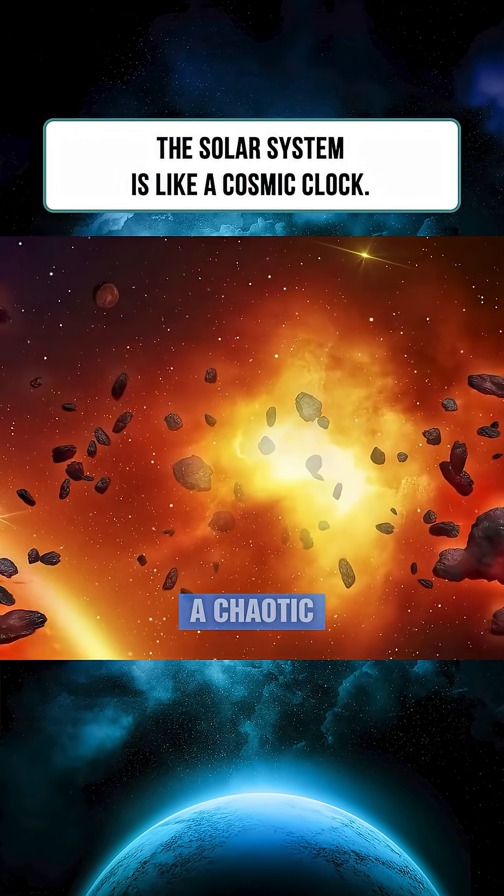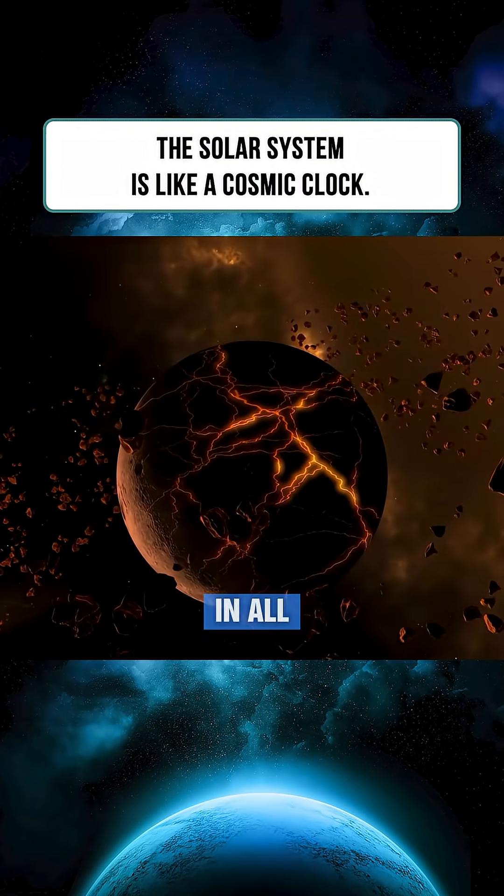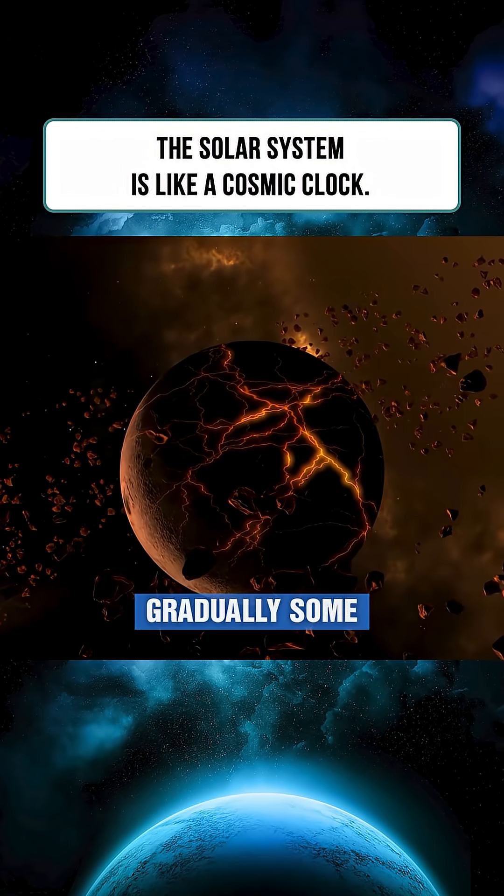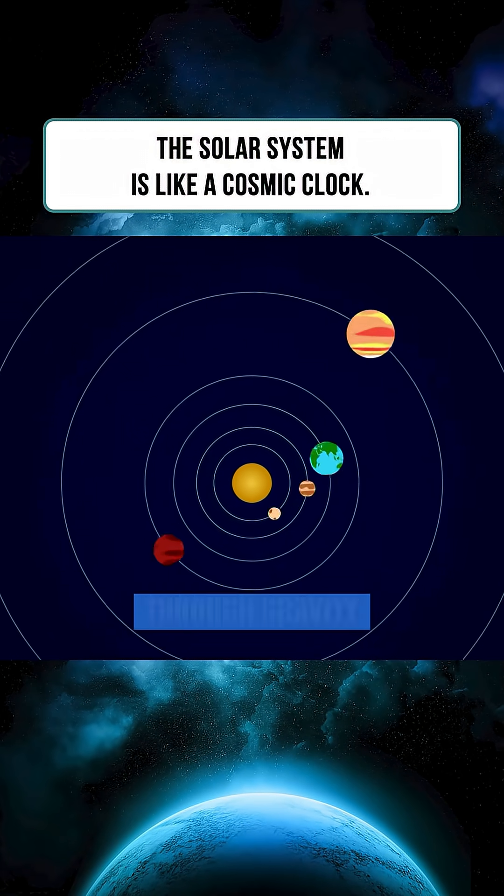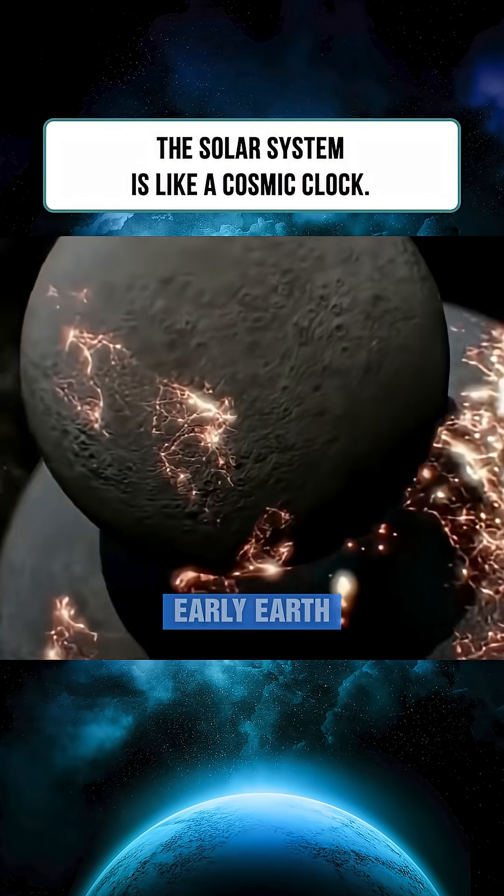In those early days, the solar system was a chaotic place, with leftover debris swirling in all directions. Gradually, some of these fragments clumped together through gravity, forming the planets including the early Earth.